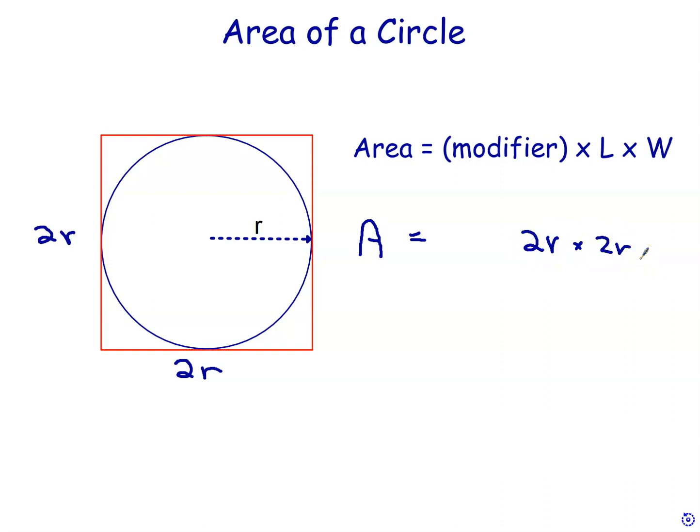Now, what about the circle? Well, when I've done this in class, I've asked the students approximately what fraction of the whole square is inside the circle? And by far the most common answer I get is three quarters. So the area of the circle is approximately three quarters times 2r times 2r.